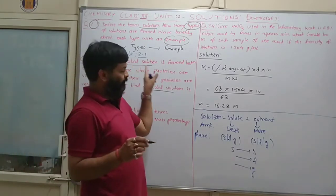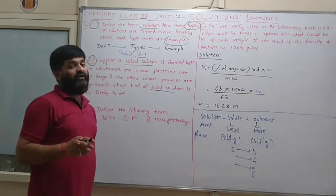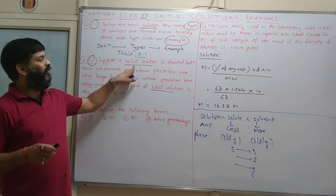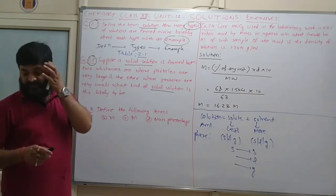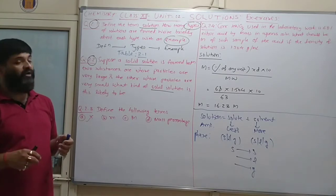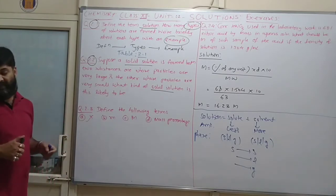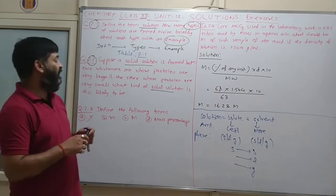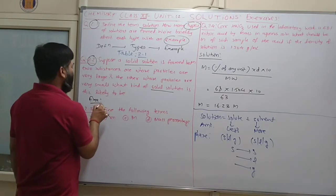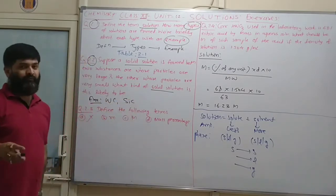If it is a solid solution, that means both the solute and solvent are present in the solid state. Well-known examples are tungsten carbide and silicon carbide.